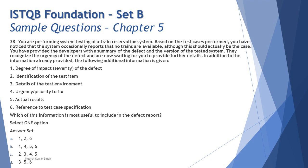In addition to the information already provided, the following six items are given as options for what additional information to include: degree of impact or severity, identification of the test item, details of the test environment, urgency or priority to fix, actual results of the execution, and reference to the test case specification. The question asks which of this information is most useful to include in the defect report.